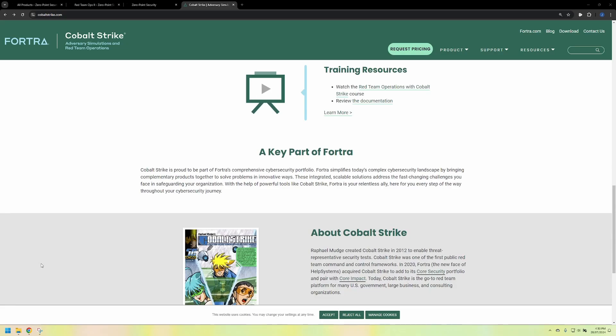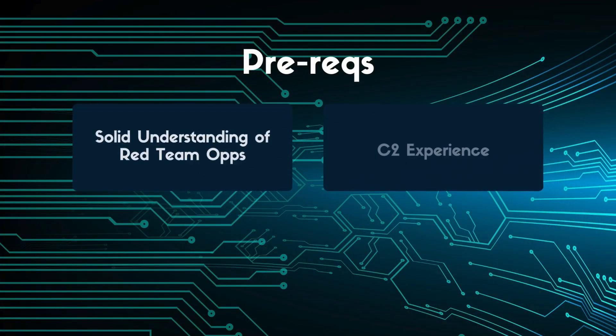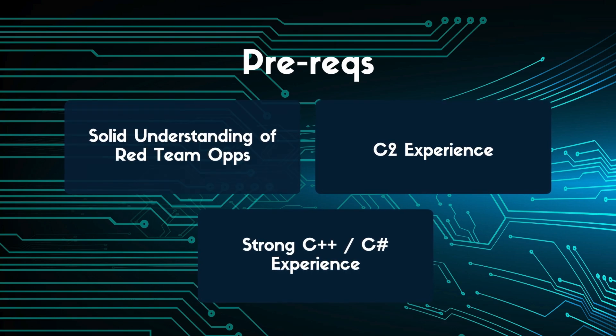While many of these concepts can be used on other C2 frameworks, there is a little bit of content here which is focused solely on Cobalt Strike, which does make it a little bit less transferable. So what would you have to already know to take on this course? The prerequisites on the website are a little bit vague, but I'd like to see it as having CRTO1 done and dusted or something of a similar nature, experience with Cobalt Strike, and a strong programming background, preferably with C# or C++.